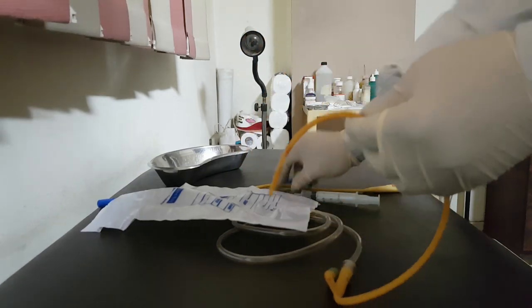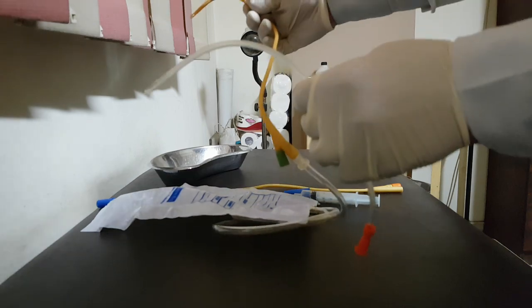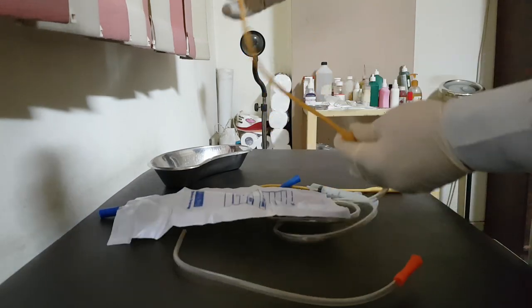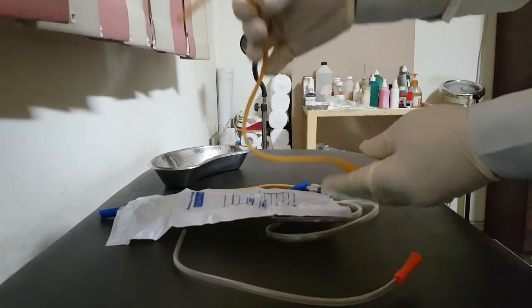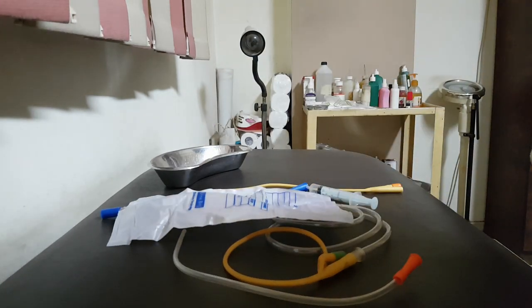So today we have two examples of catheters: the intermittent catheter, Nelaton catheter, and the indwelling catheter which is Foley catheter. I hope it was clear enough. Thank you everybody. My best wishes for all of you.